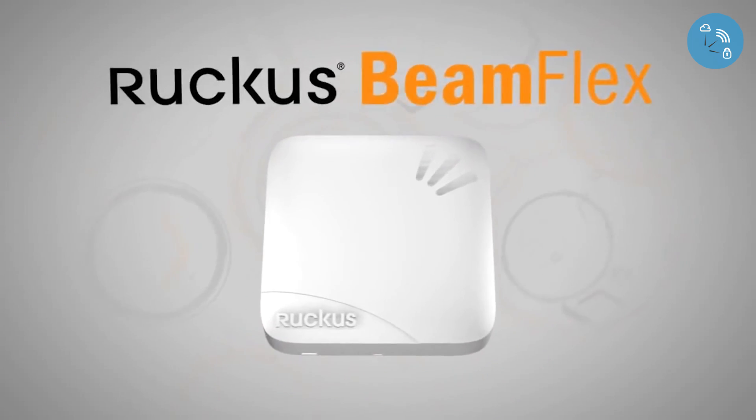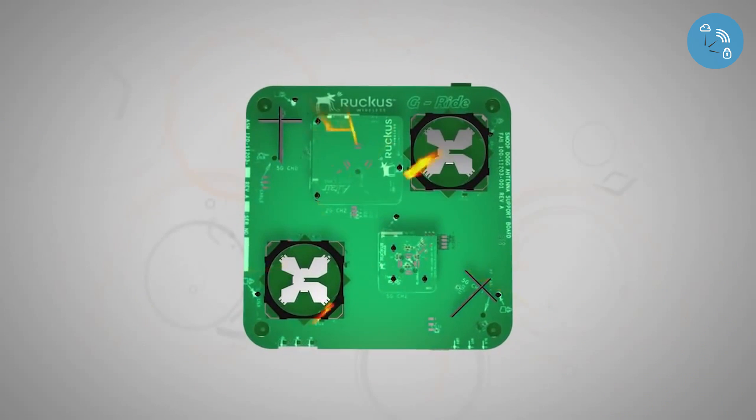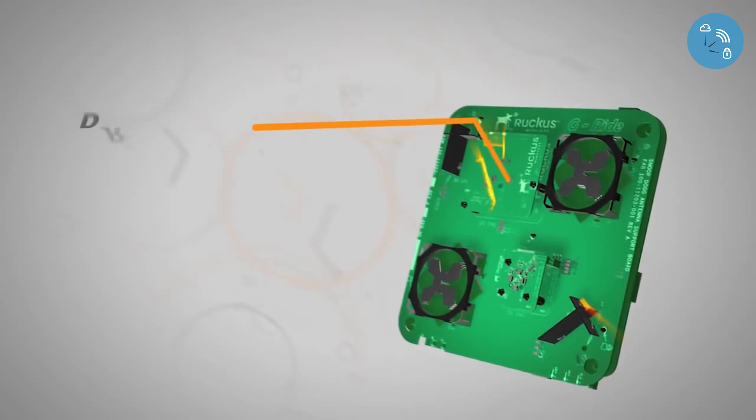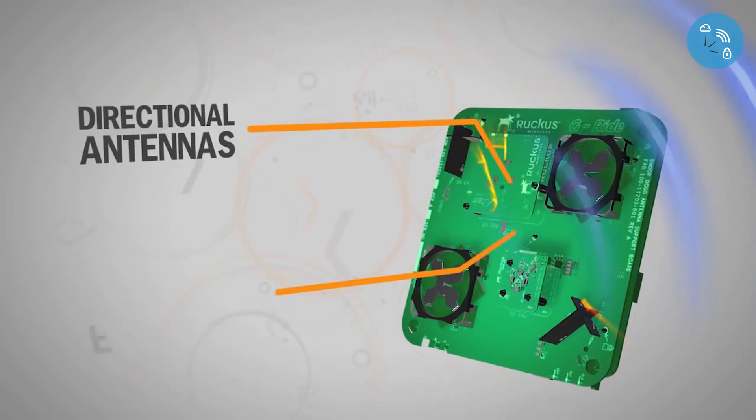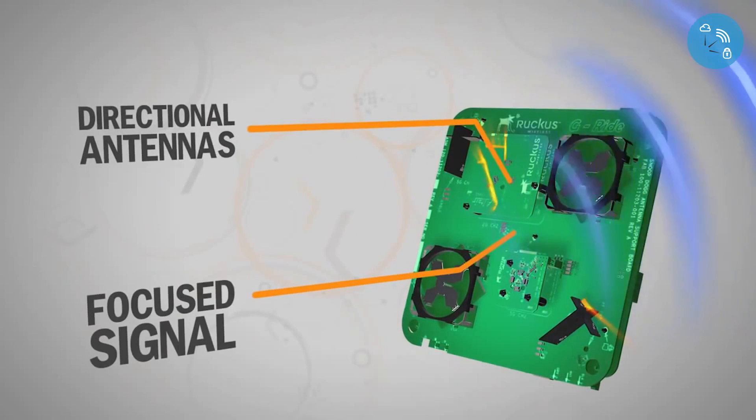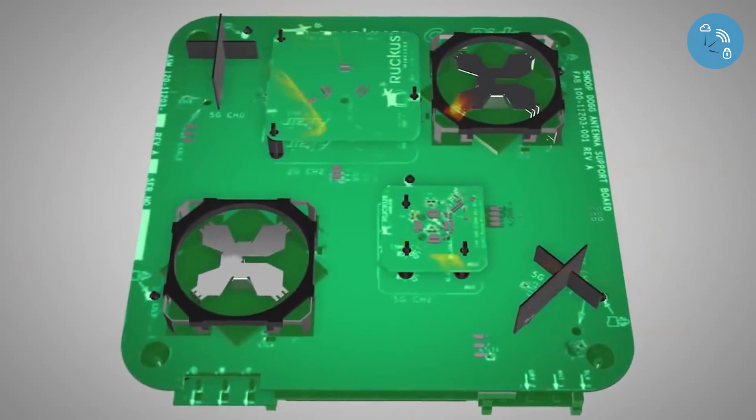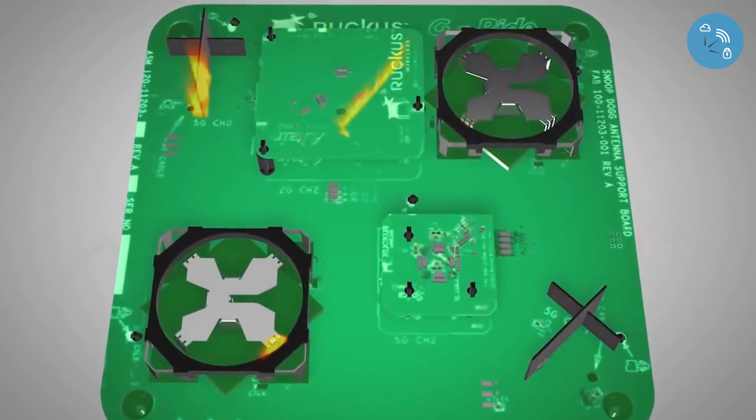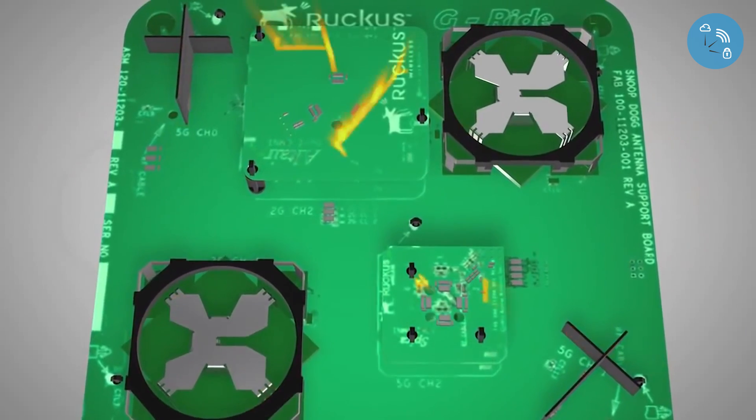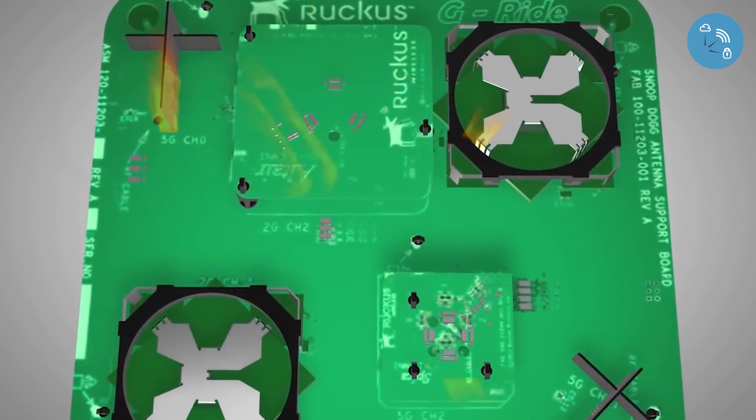Here's how it works. Through patented technology, BeamFlex automatically creates a directional Wi-Fi signal on the fly for every client. It does this by activating combinations of individual antenna elements, each working in concert to create the best possible signal path that yields the highest data rate.